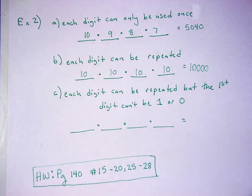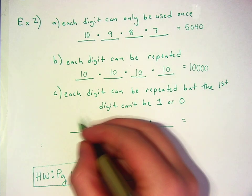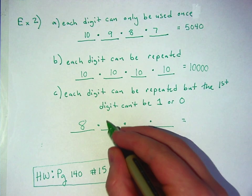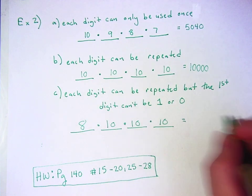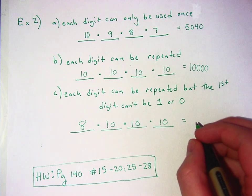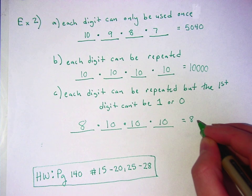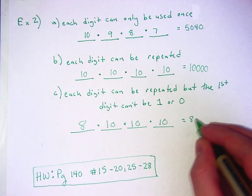All righty. So for the second one, the only rule is that you can't use one or zero for the first number, which makes it eight numbers you put there, and then just the 10 for each of the other ones because there's no rules. You can use all the numbers. That adds up to 8,000, right? How many zeros is that? Three zeros earn 1,000.